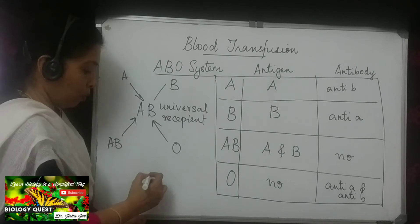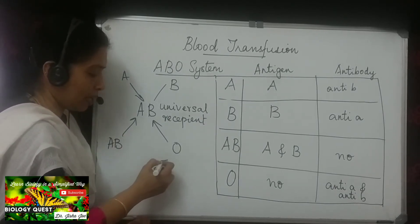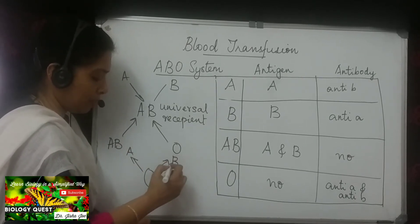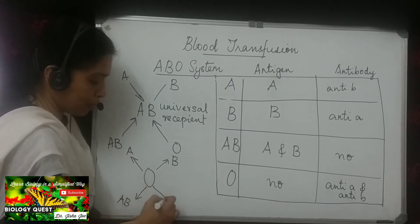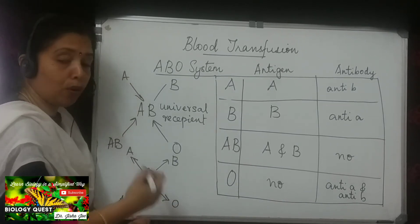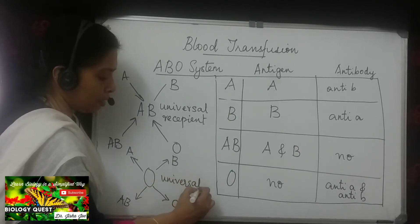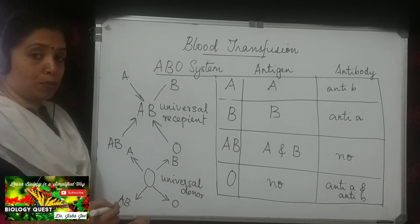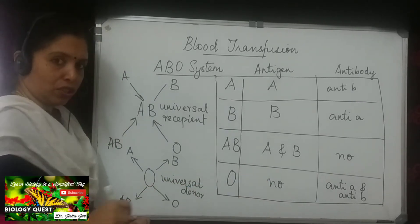Blood group O is a universal donor — O group persons can donate blood to A, B, AB, and O group persons. The reason is that O group persons do not have any antigen in their blood.